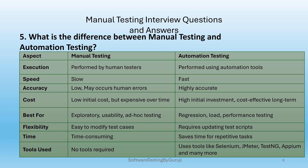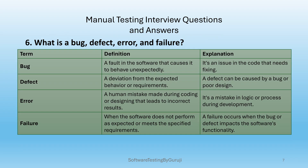A bug is a fault in software that causes it to behave unexpectedly — it is an issue in the code that needs fixing, typically created by developers. A defect is a deviation from expected behavior or requirements, where testers find a discrepancy between actual and expected results during testing. An error is a human mistake made during coding or designing that leads to incorrect results — a mistake in logic or process during development.